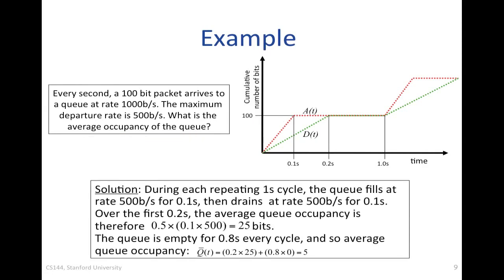The solution: during each repeating one-second cycle, the queue fills at 500 bits per second for 0.1 seconds (the arrival phase), then drains at 500 bits per second for 0.1 seconds. Over that 0.2-second active period, the average occupancy is 0.5 × 0.1 × 500 = 25 bits. The queue is empty for the remaining 0.8 seconds. Therefore the average queue occupancy Q̄ = (0.2 × 25 + 0.8 × 0) / 1 = 5 bits.